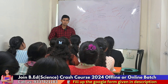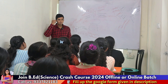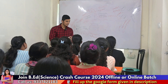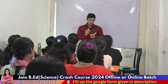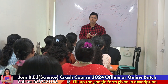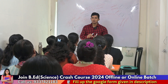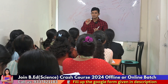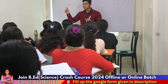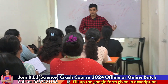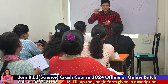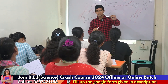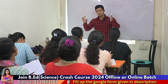The pituitary gland, which is present in our brain, releases LH and FSH. These two hormones are called the gonadotropin hormones. Why are they called gonadotropin hormones? Because they act on the gonads. The male gonad is the testis and the female gonad is the ovary. So LH and FSH act on the male gonad testis and the female gonad ovary — that is why they are called gonadotropin hormones.